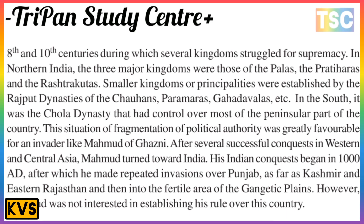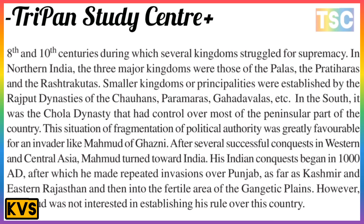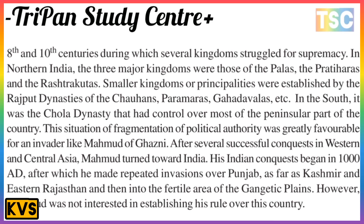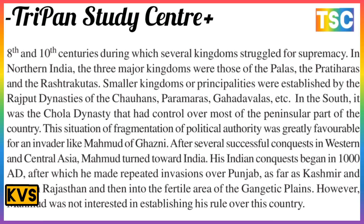The three major kingdoms were those of the Palas, the Pratiharas, and the Rashtrakutas. Similar kingdoms of principalities were established by the Rajputs — the Chauhans, Paramaras, Chandellas, etc. In the south, it was the Chola century that had control over most of the peninsular part of the country.